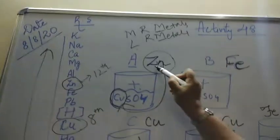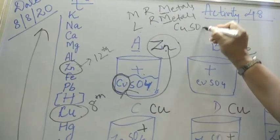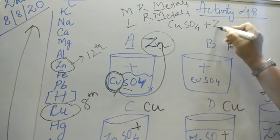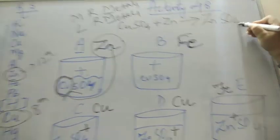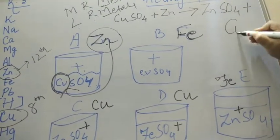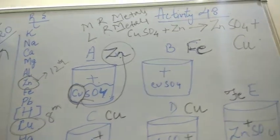More reactive metal will displace the less reactive metal. So here the reaction formed will be CuSO4 plus Zn. The reaction will be ZnSO4 plus Cu. It will tell to leave the place. Let's see the second one. In the same manner you will do.